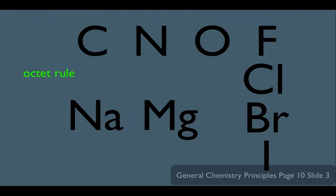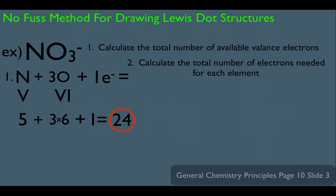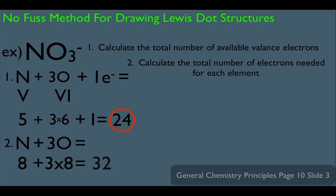These are elements that need eight electrons around them to be happy. Notice nitrogen and oxygen are both on the octet rule list. So each one of these elements in this molecule needs eight electrons. Nitrogen needs eight, and the three oxygens each need eight. So eight plus three times eight gives us 32 total needed electrons.